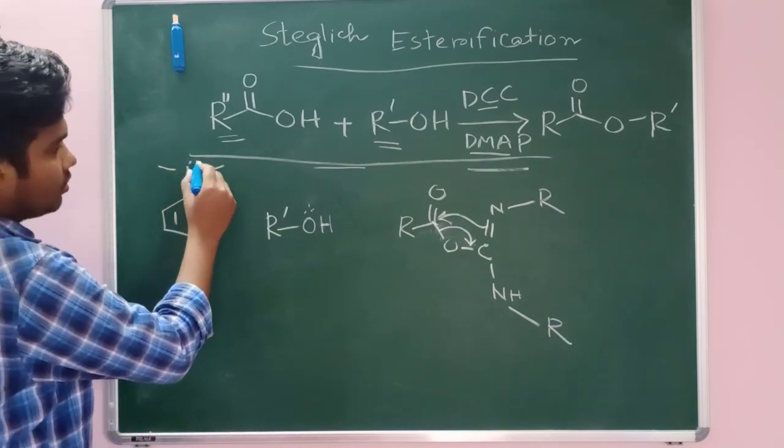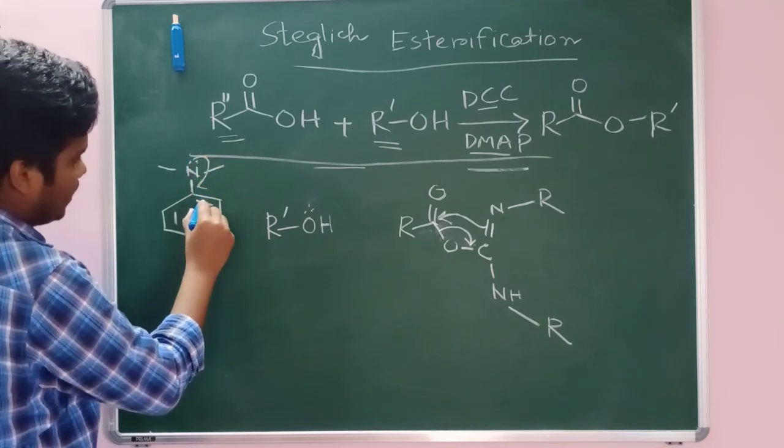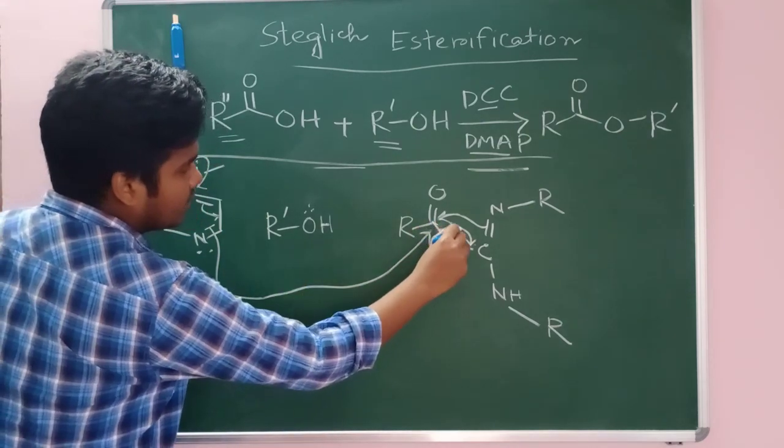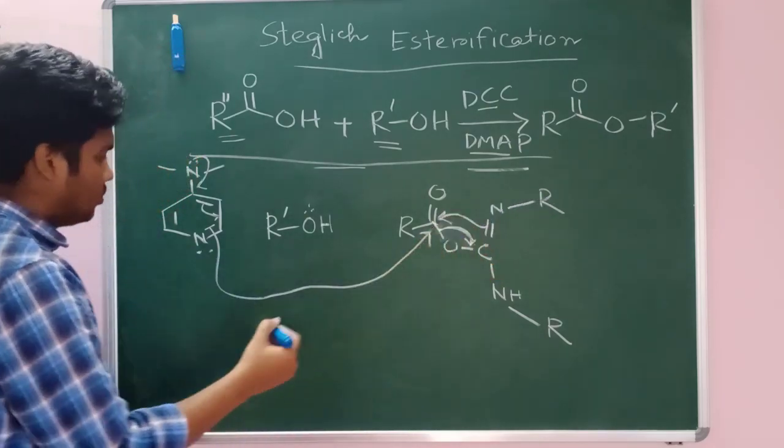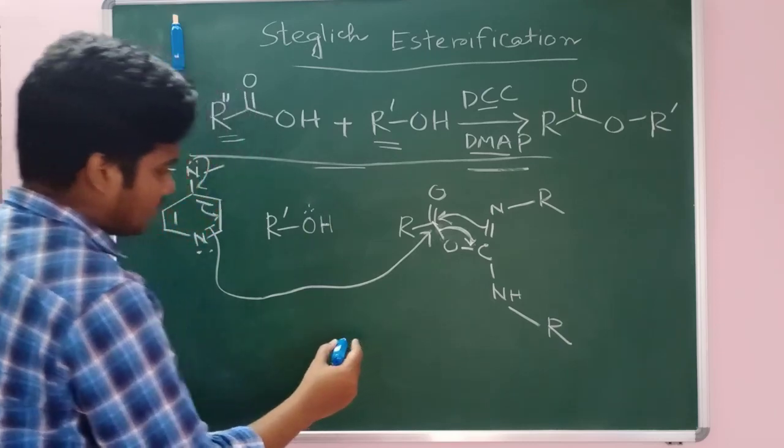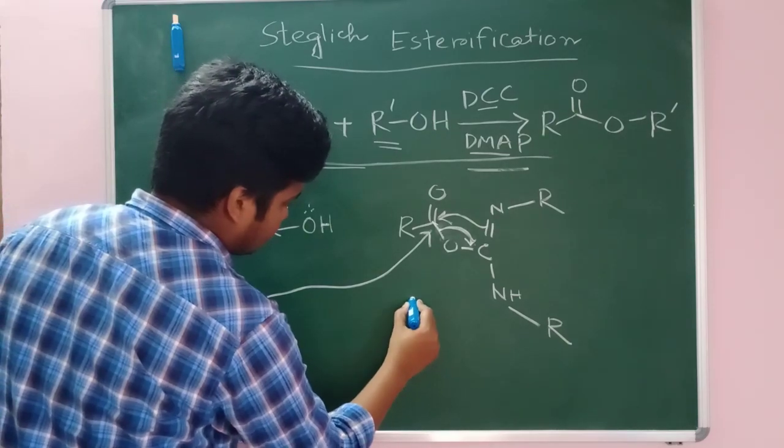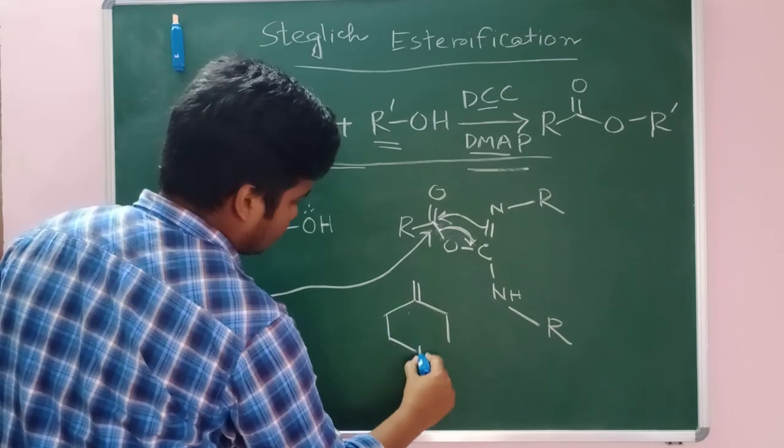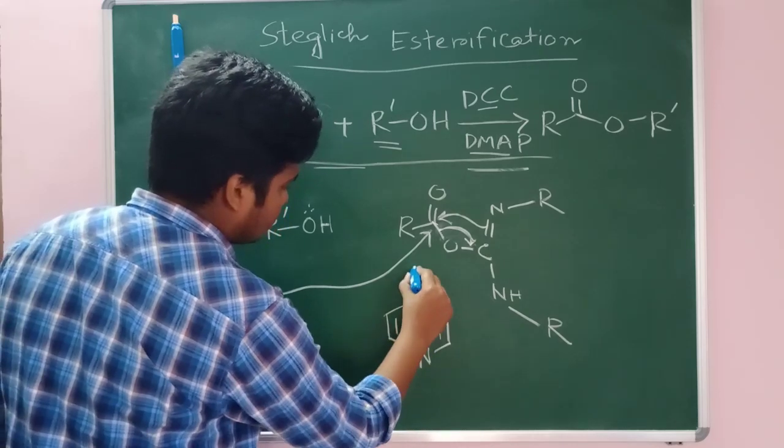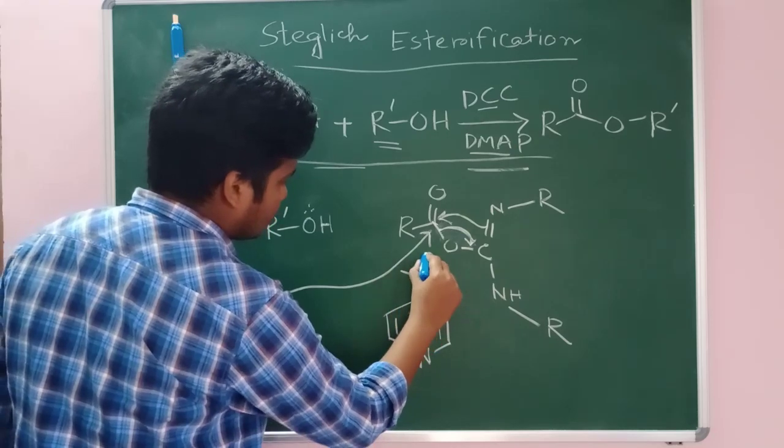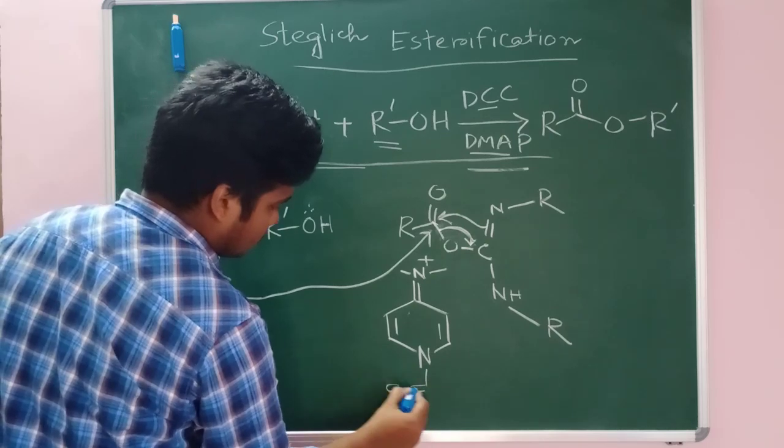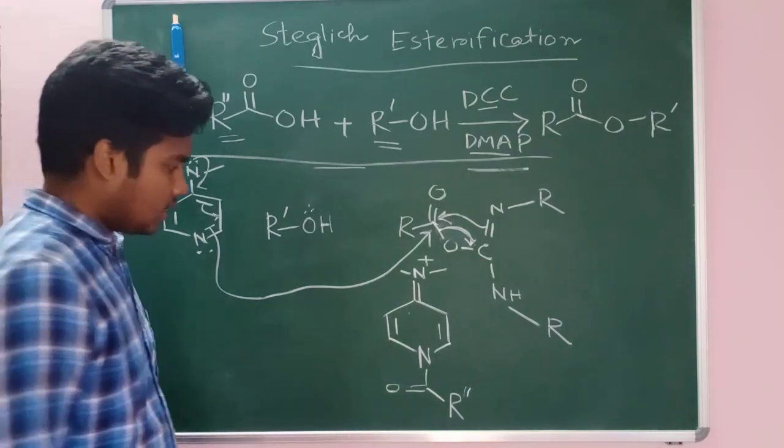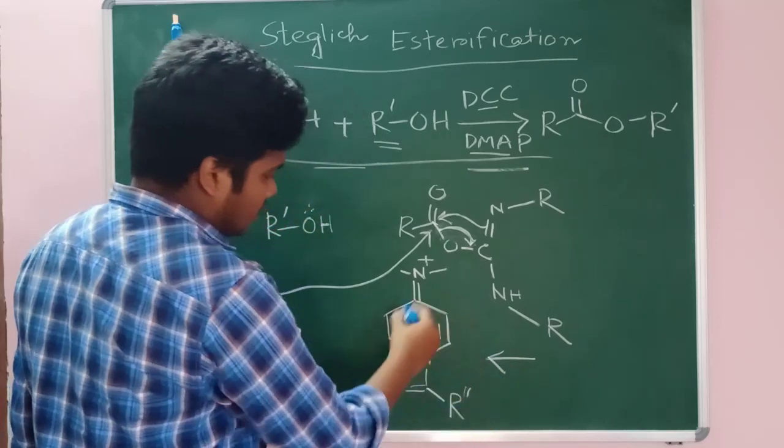First DMAP, what DMAP will do? This DMAP, here you can see resonance is present. This nitrogen center will add and this bond will go out and this whole moiety will go out. So what we will get? We will get this intermediate.